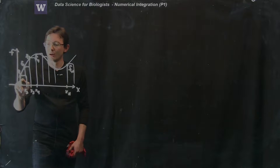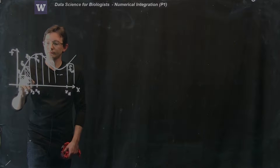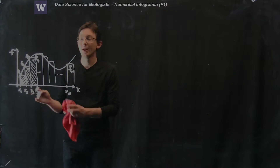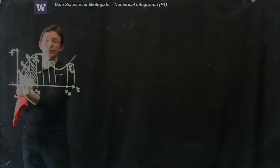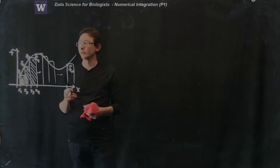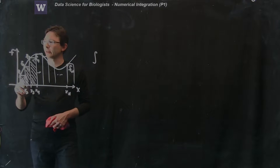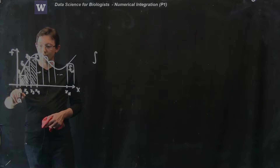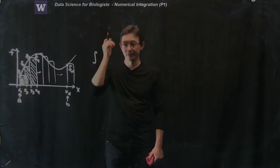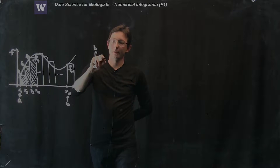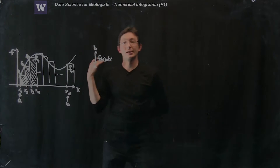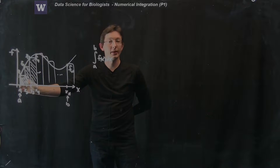We approximate the area under the curve by the sum of all of these rectangular areas — literally adding up all of these rectangles — and it's a pretty good approximation. As we make delta x smaller and smaller, these rectangles get closer and closer together and do a better job of approximating this integral. So I'm going to write down the formula: we integrate from some location a to some location b, integrating f of x dx.